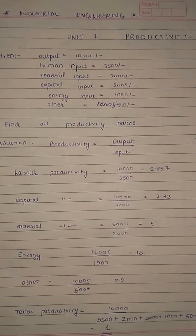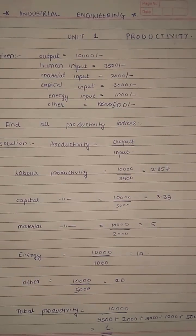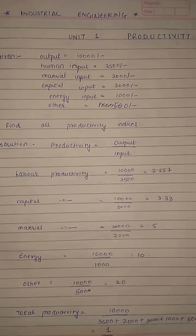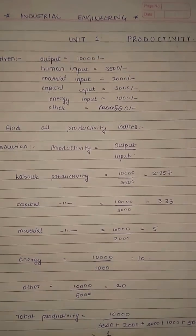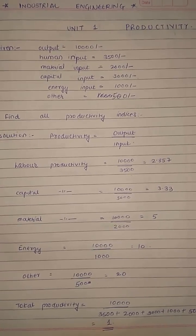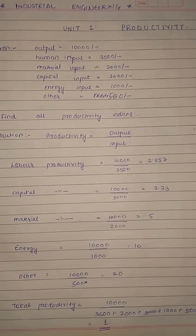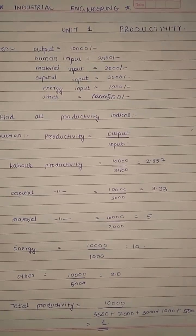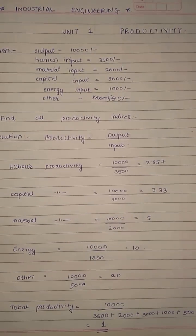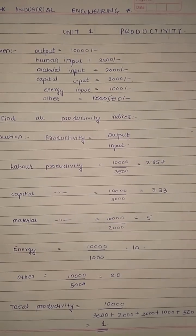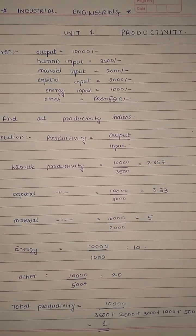Hello friends, Chirag here back with another episode. Today we will be learning industrial engineering numericals. The first unit is productivity, which has two types of sums. We will be finding out various productivity factors and also in the second numerical we will be finding out the efficiency.